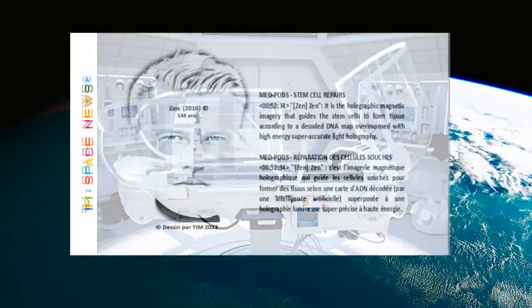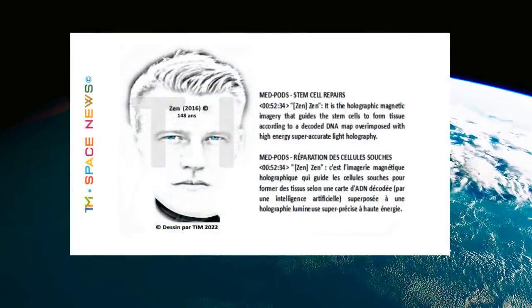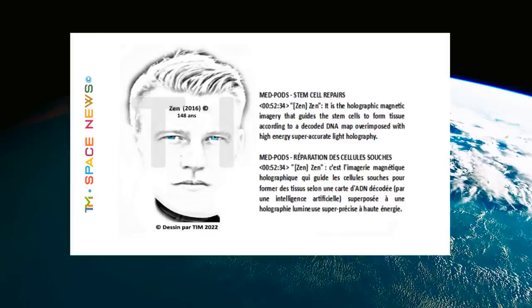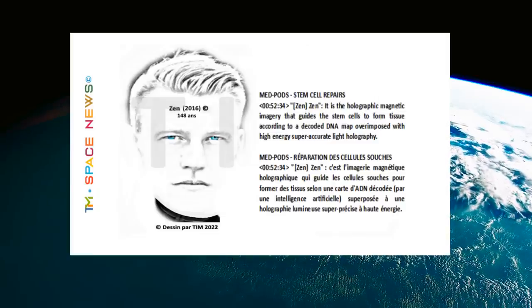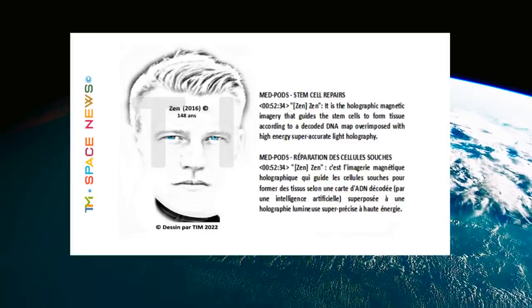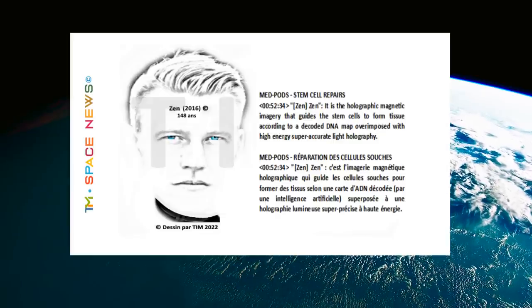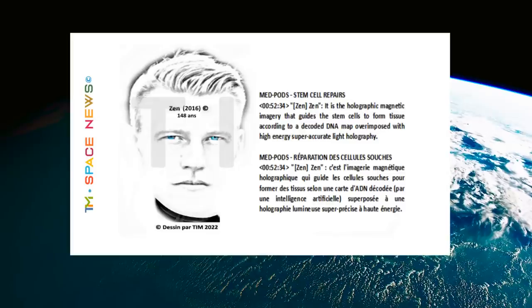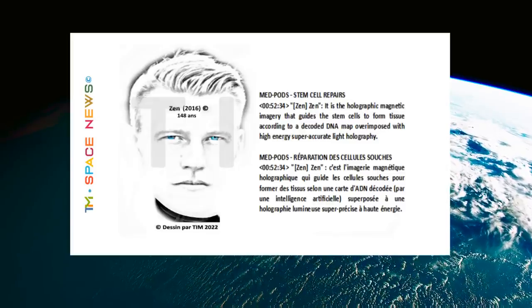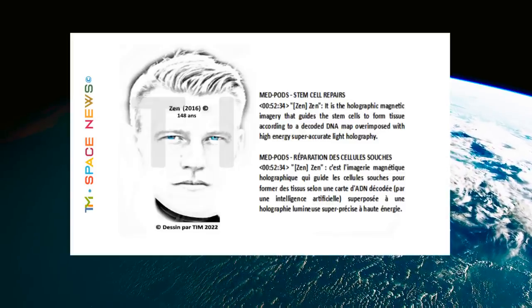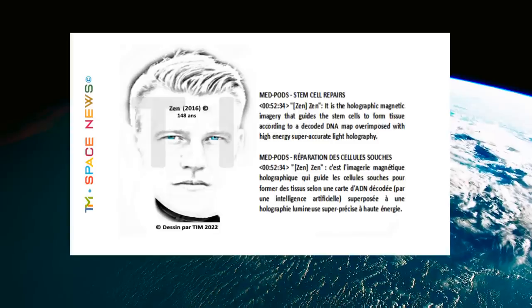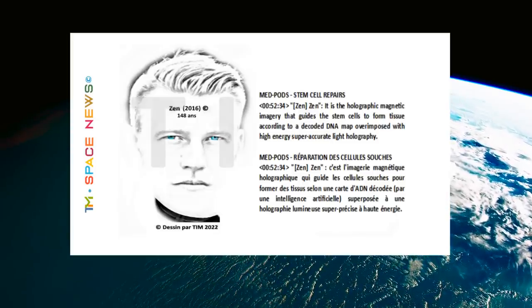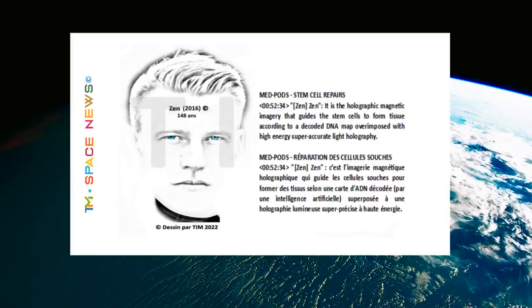Zen m'a aussi signalé que non seulement l'ADN peut être copié à distance, mais que c'est l'imagerie magnétique holographique qui guide les cellules souches pour former des tissus, selon une carte précise, un modèle d'ADN décodé par une intelligence artificielle et qui est superposée à un modèle d'holographie lumineuse super précise à haute énergie.